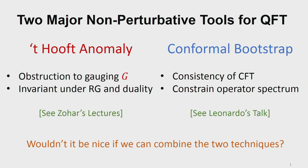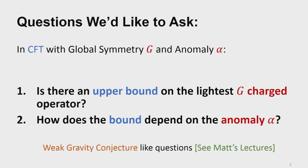The motivation of the talk today is to combine the two. The concrete question we are going to ask is: in a CFT with global symmetry G and 't Hooft anomaly denoted by alpha, is there an upper bound on the lightest G-charged local operator? How does the bound depend on the 't Hooft anomaly alpha? This smells very much like a weak gravity conjecture question, but in the context of CFT.